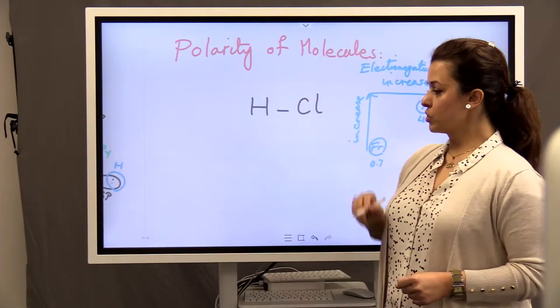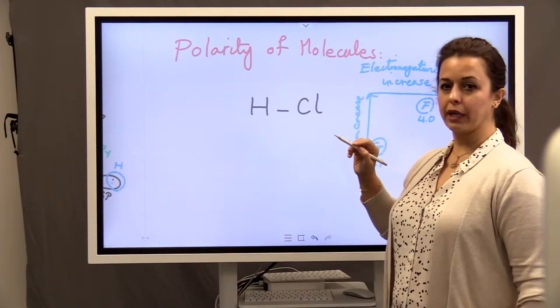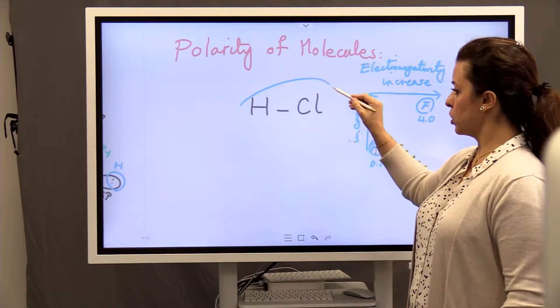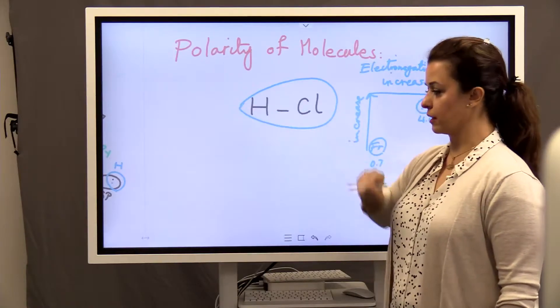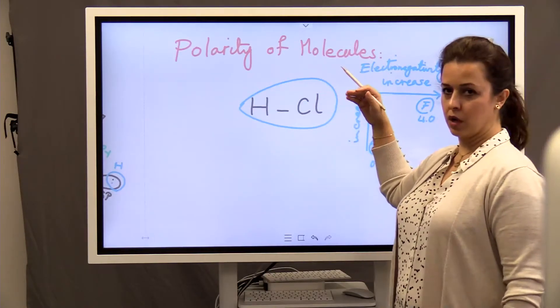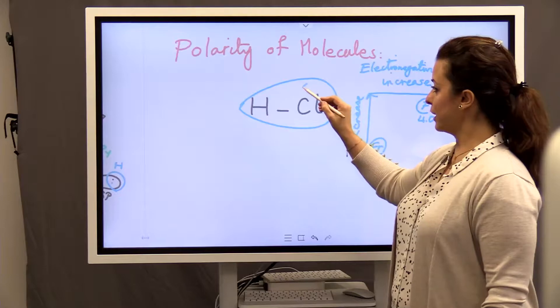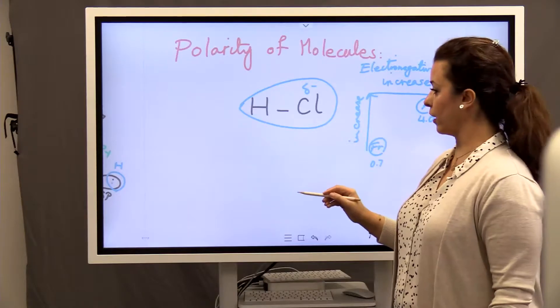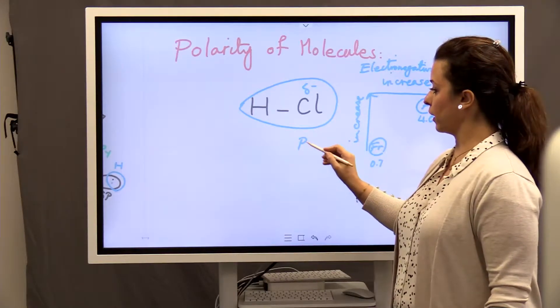So between hydrogen and chlorine, chlorine is more electronegative. So if we look at this molecule under a microscope, you will see such an electron density more over chlorine. So we put a delta sign. This is the lowercase delta. We call it partially negative.